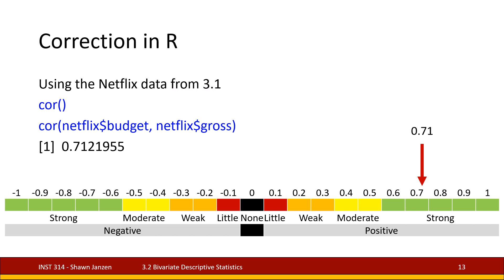As an example, we're going to look at the Netflix data to see if there is a correlation between a movie's budget and its gross — how much money was spent versus how much money it made. The function for this is just cor. If we run cor on these two variables, it gives us a correlation value of approximately 0.7, which on our scale indicates a strong positive correlation. There is a strong relationship between a movie's budget and its gross.